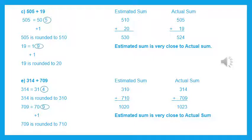Now we find the estimate sum: 510 and 20 — when we add them, the answer is 530. For the actual sum, 505 plus 19: 5 plus 9 is 14, write 4 with carry 1. 1 plus 1 is 2, and 2 plus 0 is 2, and 5 as it is. So the actual sum is 524. The estimate sum is very close to actual sum. You need to write down this line, otherwise your marks will be deducted, because it is asked to compare the actual sum with estimated sum.